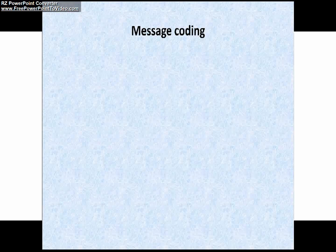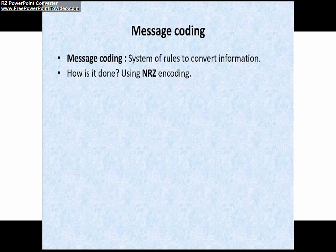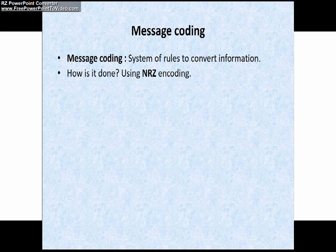What do you mean by message coding or message encoding? In a CAN network, message coding means a system of rules for information or data conversion. For example, consider data in analog form that you want to convert into digital form. In CAN, this is accomplished with the help of message encoding, done using NRZ encoding.